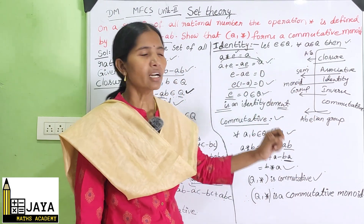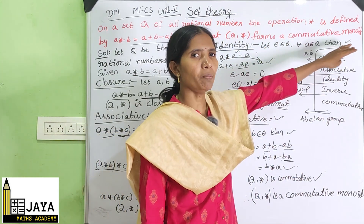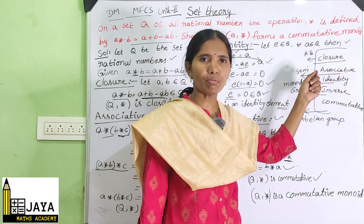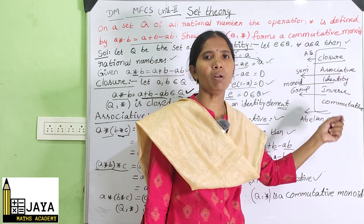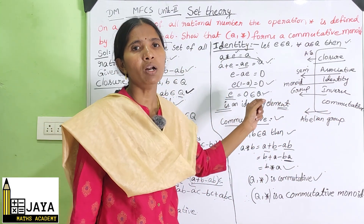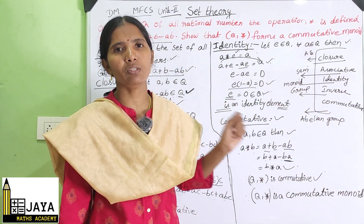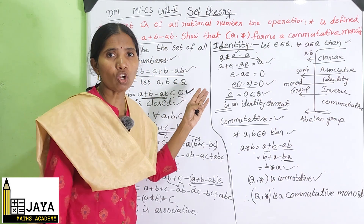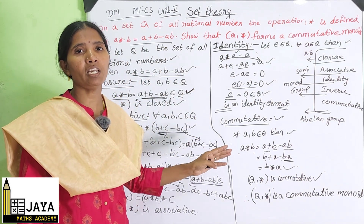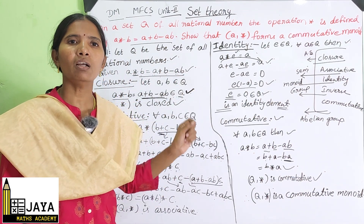So therefore (Q, ★) is a commutative monoid. This is one of the different problems you have to learn to write your semester exams. If you have any doubts, comment below, and don't forget to subscribe.